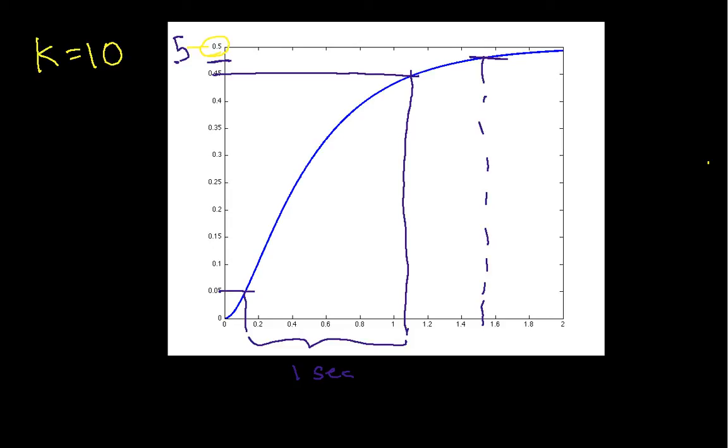Overshoot is 0. My desired value, again, is 1. And you can see that I never even get close to 1. So for k equals 10, I have a fairly long rise time. I've got a fairly significant steady state error of 0.5. I have an overshoot of 0 because I never get close to the value I want to get to. So k equals 10 doesn't seem to be a particularly good gain.